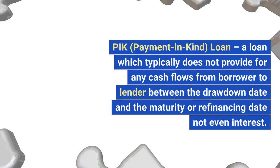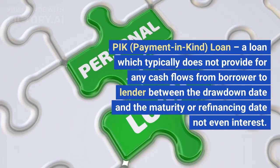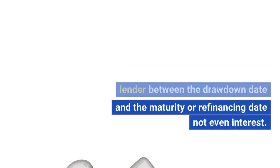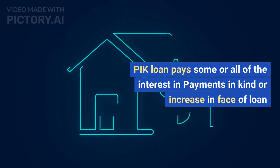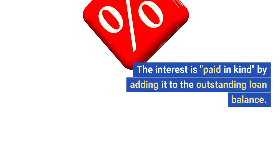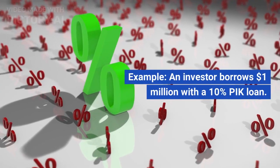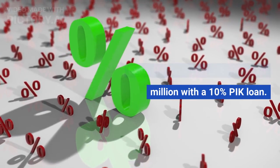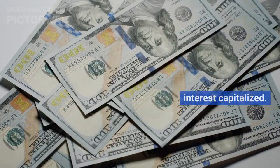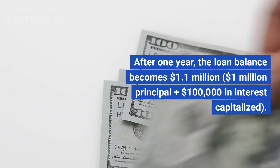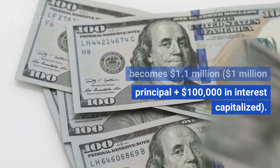PIC — Payment in Kind — loan: a loan which typically does not provide for any cash flows from borrower to lender between the drawdown date and the maturity or refinancing date, not even interest. A PIC loan pays some or all of the interest in kind, as an increase in the face of the loan; the interest is added to the outstanding loan balance. Example: an investor borrows $1 million with a 10% PIC loan. Instead of making cash interest payments, they choose to have the interest capitalized. After one year, the loan balance becomes $1.1 million — $1 million principal plus $100,000 in interest capitalized.